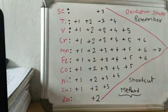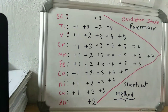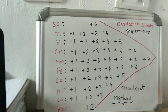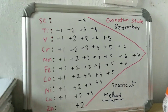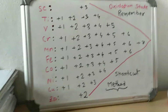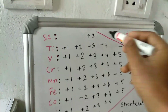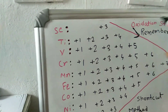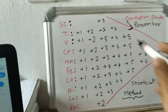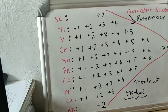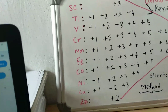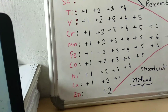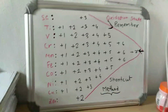Now on the whiteboard you can see the whole pattern, which will be easy to understand visually. The oxidation states increase from Scandium to Manganese — D1 through D5 — with D5 being the middle and maximum. Then from Iron onwards it decreases. This is a shortcut method to help you remember the pattern.